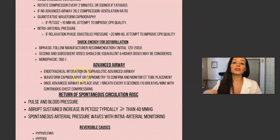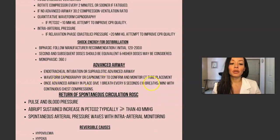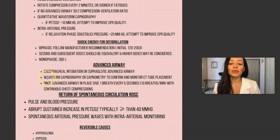Advanced airways include endotracheal intubation or supraglottic advanced airway. Use waveform capnography or capnometry to confirm and monitor tube placement. When I was doing my ACLS, waveform capnography was a major focus — it is a test question. They ask which is the most effective way to confirm placement, and the right answer is waveform capnography. Once an advanced airway is in place, give one breath every six seconds — that's 10 breaths per minute — with continuous chest compressions.